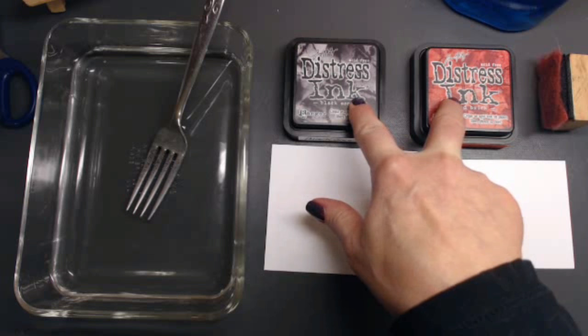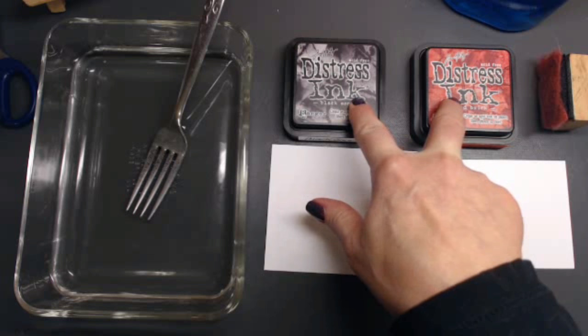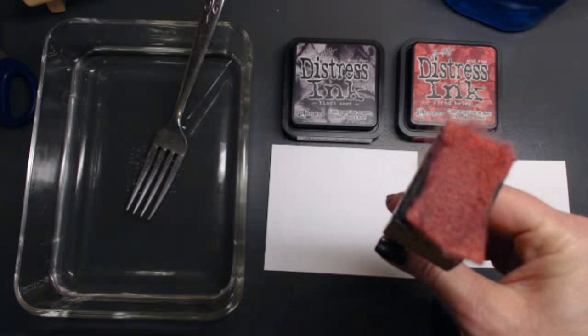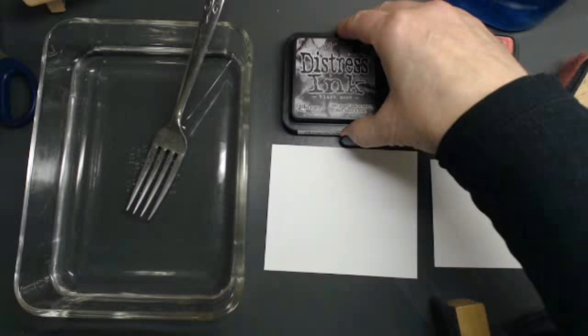Two dark distress inks and it has to be the distress inks because they react with water. So if you don't have the distress inks, you want to run out and get just a couple of them because you don't need that many to make this work and then you need something to get the ink onto the paper. Now I'm going to start with black, black soot.